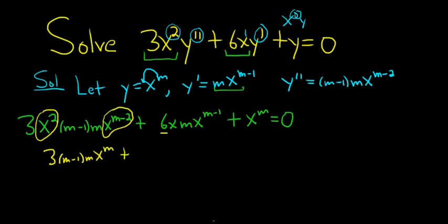Plus, here we have 6m, and then x to the 1 times x to the m minus 1. When you add the exponents, again, you'll get x to the m. And here we have plus x to the m. It's all equal to 0.